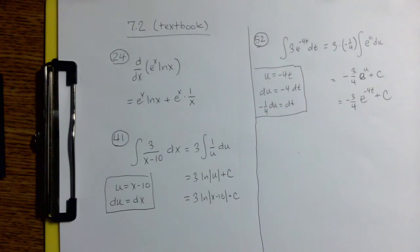So we've got 3 natural log of the absolute value of u plus c. And just as I mentioned in the previous video, when you're doing substitution with an indefinite integral, you want to make sure you go back to the original variable. So that's why we end this off by saying that that's equal to 3 times the natural log of the absolute value of x minus 10 plus c.